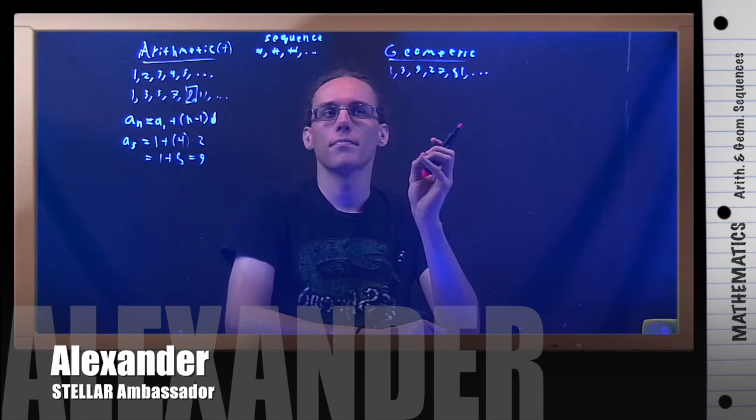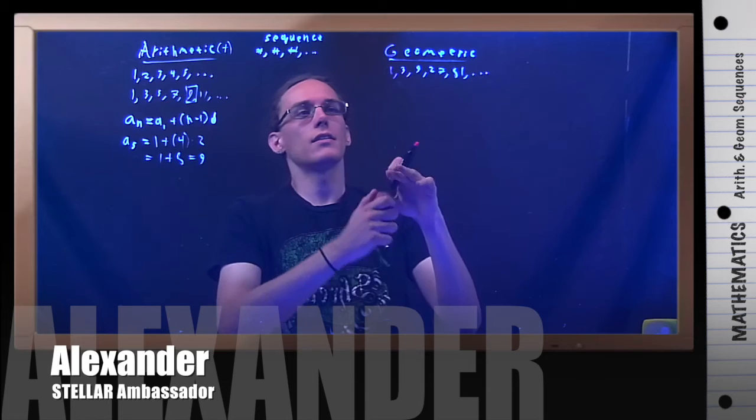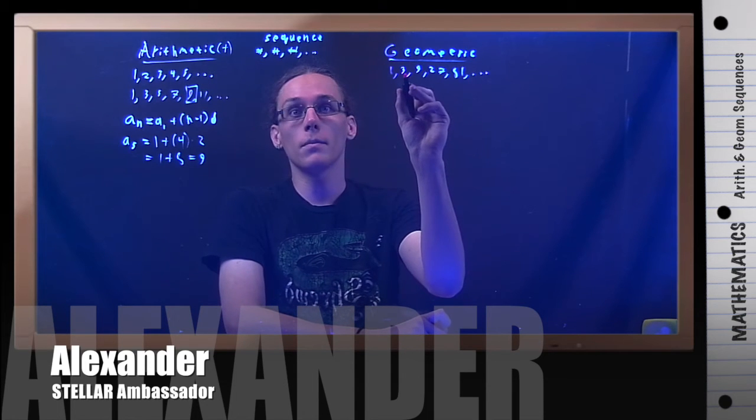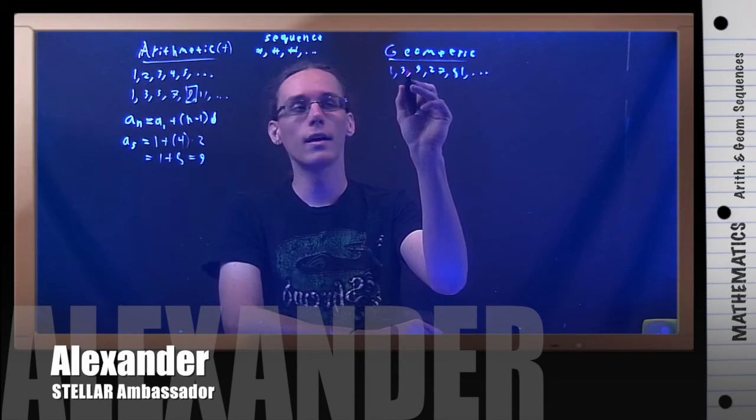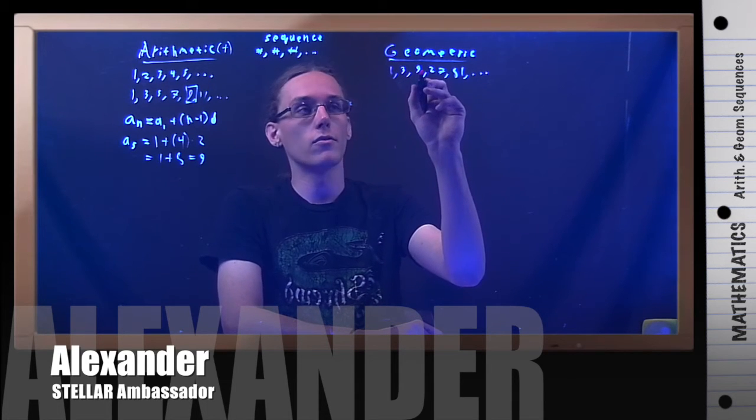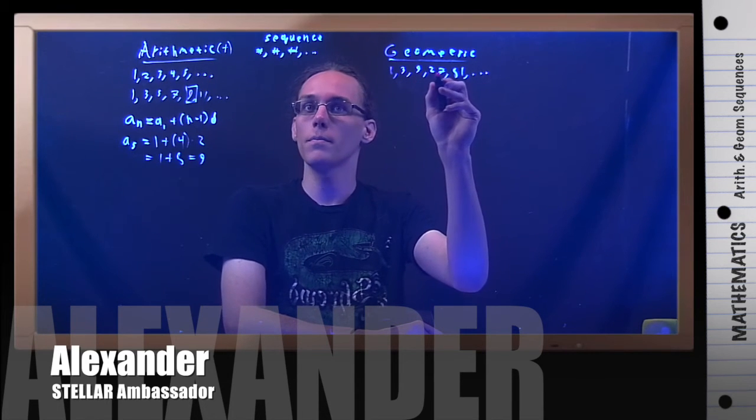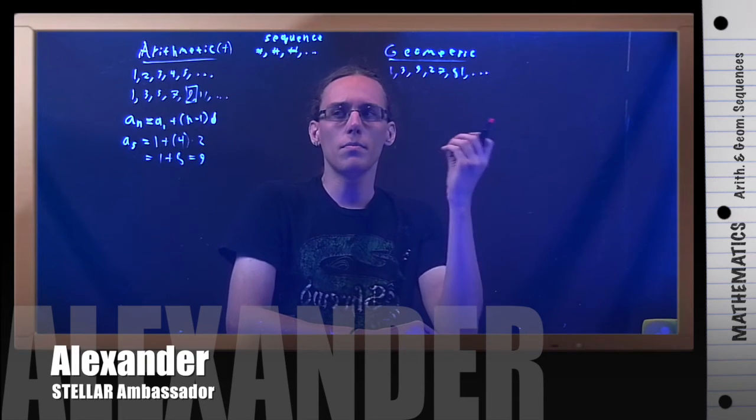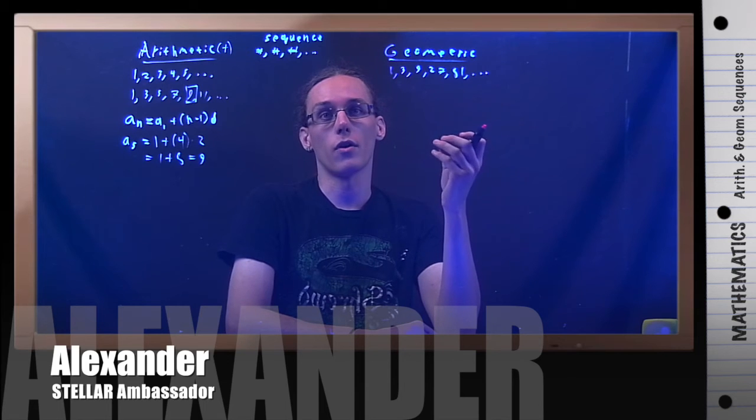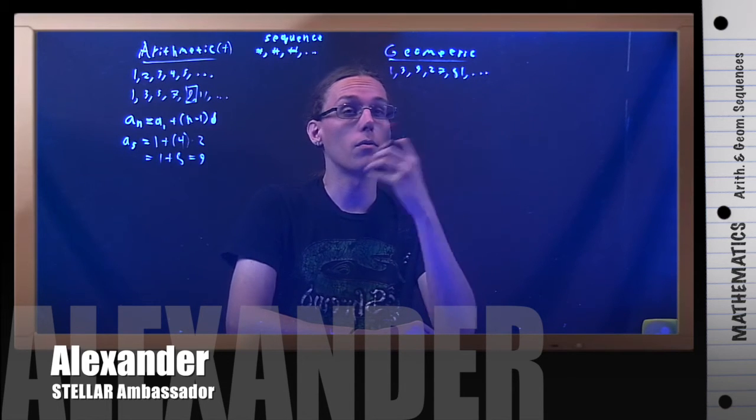But there is a pattern here. What's going on is that if I do one times three, that gives me three. If I do three times three, that gives me nine. If I do nine times three, that gives me 27. If I do 27 times three, that gives me 81. So, what's going on here is I'm multiplying something over and over. I'm not adding something over and over, but multiplying.